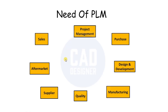For example, the different departments in the company include project management, purchase department, design and development, manufacturing, quality, supplier, aftermarket, and sales. All these departments work for a particular product to make it happen and get it launched on time. Before PLM systems, they shared data and information on servers or files via email, but sometimes miscommunication would happen.